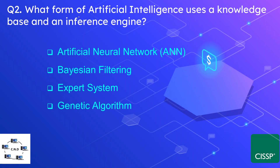Question number 2: What form of artificial intelligence uses a knowledge base and an inference engine? The options are artificial neural network, Bayesian filtering, expert system, or genetic algorithm. The correct option is expert system.